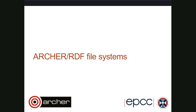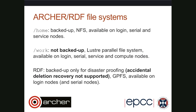So, the Archer and RDF file systems — hopefully if you're an Archer or RDF user you understand a bit about this already. On Archer, we have two file systems on the supercomputer itself. We have Home, which is a backed-up NFS file system. It's available on the login nodes, the serial post-processing nodes, and the service nodes — the ones that sit between running a job and the compute nodes, looking after launching jobs onto the compute nodes.